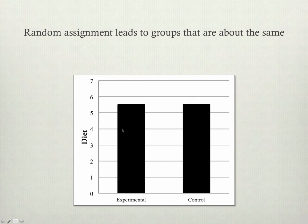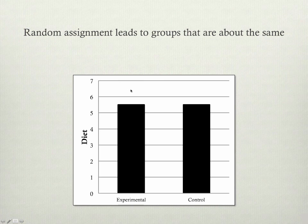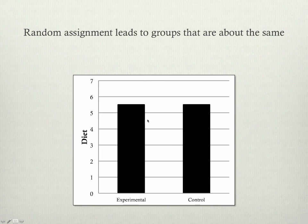So random assignment is sort of the great equalizer of everything between the two groups, as long as you have enough — a reasonable number of participants in each group.